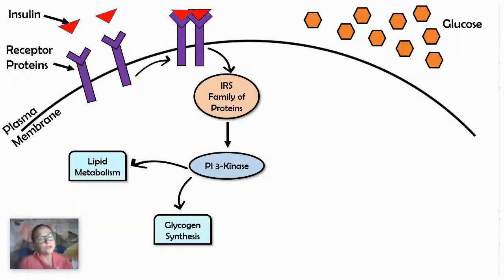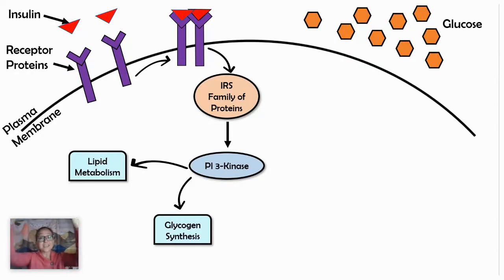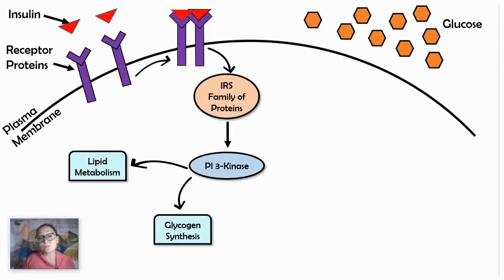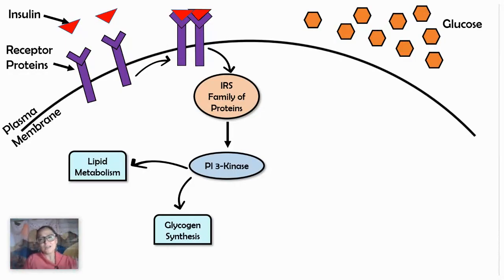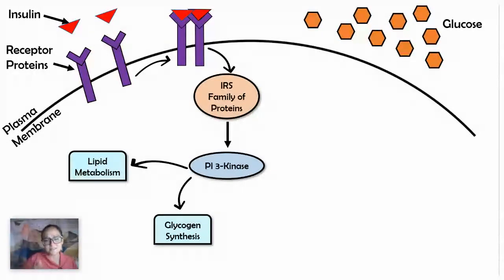Think about glycogen synthesis: we take glucose and hook it together in a chain called glycogen, so it makes sense that a cell response would be to build the polysaccharide and lower sugar from our blood. Now, you may be thinking back to when you learned about facilitated diffusion — how glucose can enter a cell from high to low concentration through a channel protein, like a protein carrier. You might be wondering, why do I need insulin then? Why doesn't the glucose just diffuse into the cell?